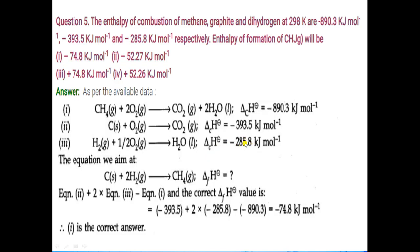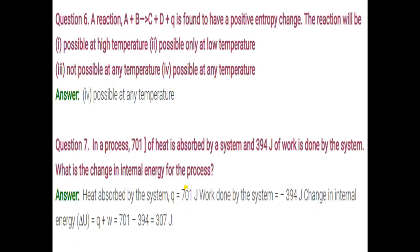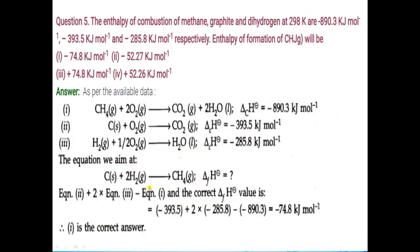Now, our aim is to find the enthalpy of formation of methane. Write the formation equation: one mole of methane is formed from its elements — carbon and hydrogen. Carbon plus hydrogen gives methane; balance this equation. We have to find the enthalpy of formation. We want to get this equation from the three combustion equations by adding or subtracting them.